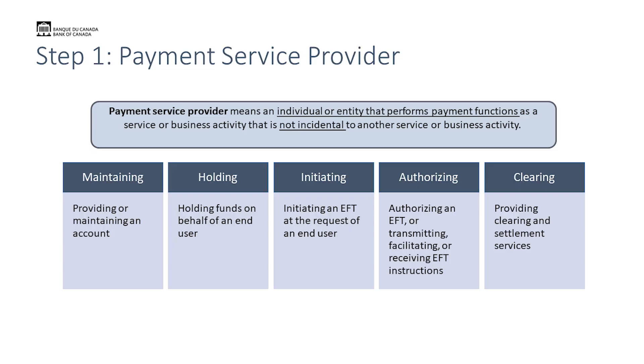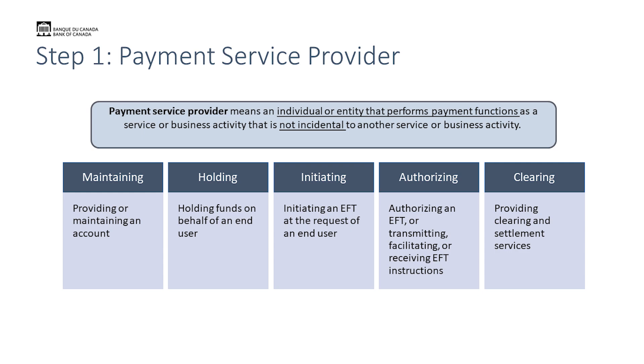The third function is that you are initiating an EFT at the request of an end user — that means you launch the first payment instruction requested by an end user to start the electronic funds transfer. The fourth function is that you are authorizing an EFT or that you are transmitting, facilitating or receiving instructions related to an EFT. You are authorizing an EFT if you establish whether an EFT can be performed, including enabling end users to give or withhold consent to send or receive electronic funds transfers. You are transmitting, receiving or facilitating an instruction about an EFT if you send or receive payment instructions or provide the infrastructure that enables payment instructions to be sent or received.